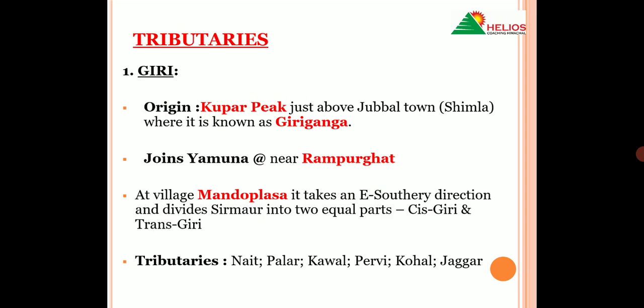Ab hum dekhenge Yamuna ki major tributaries in Himachal Pradesh. Sabse pehli major tributary hai Giri. Giri river ka origin hota hai Kupar Peak se, jo ki Jubbal town ke Shimla district mein lay karta hai — us Jubbal town ke just upar yeh peak lay karta hai. Us region mein, Jubbal valley region mein, Giri river is called Giri Ganga. Yeh river Yamuna ko join karti hai near Rampur Ghat in Sirmoor district. Village Mando Plasa ke paas yeh river ek east-southerly direction mein turn leti hai, aur this river divides Sirmoor into two equal parts, that is called cis-kiri and trans-kiri, yarni ki Giri-aar aur Giri-paar. Iski jo major tributaries hain woh hain: Net, Palar, Kaawal, Pervi, Kohal aur Jagar. Yaad rakhiyega ki Giri jo hai woh khud Yamuna ki ek tributary hai, aur uski khud ki tributaries yeh saari rivers hain.